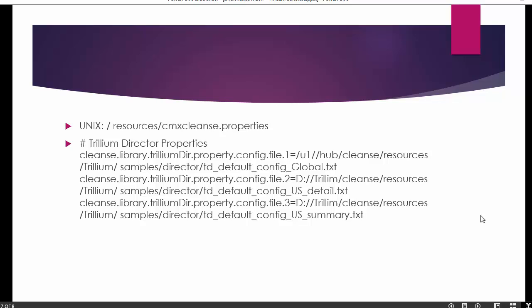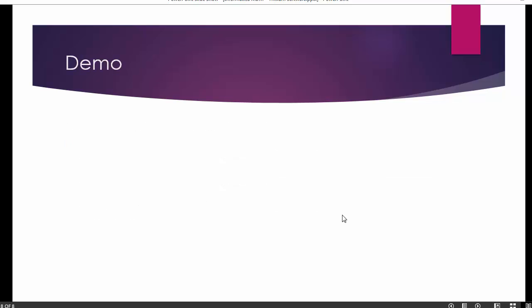To configure the integration, go to the cmx_cleanse.properties file, which is available in the resource folder inside the MDM Hub installation directory. Edit that file — there are properties such as cleanse.library.trillium_dir and config properties. By default, these properties in cmx_cleanse.properties are empty. You need to configure the paths to the files mentioned in the slide. When configuring Trillium software in your MDM Hub, refer to the slide to know which config property file to set in cmx_cleanse.properties.